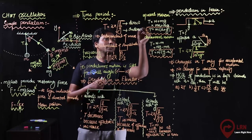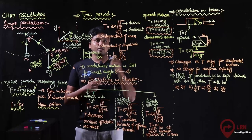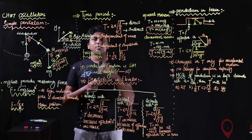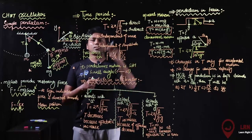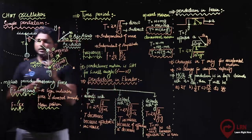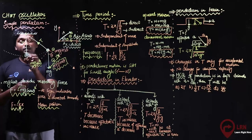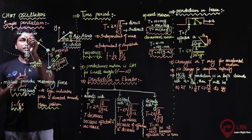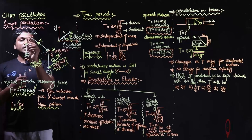What does this mean? If you increase the length, the time period will increase. And if you increase the value of g, the time period will decrease. The length L in the formula is measured from the pivot to the center of the bob — this is a very important point. We do not mark the length to the top of the ball; we mark it to the center of the ball.